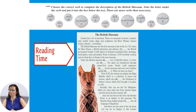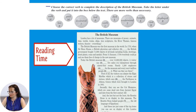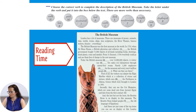The British Museum. London has a lot of museums. There are museums of money, animals, time, textile, trains, ships, wax sculptures, the River Thames, famous writers, theatre — everything. The British Museum was the first museum in the world.